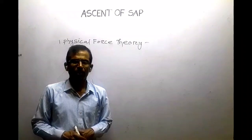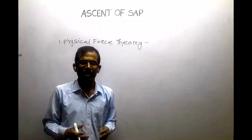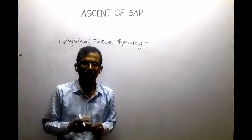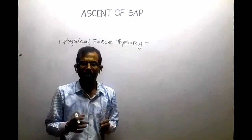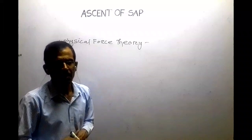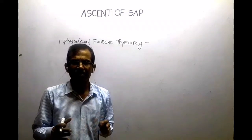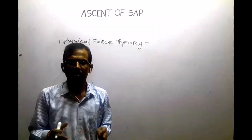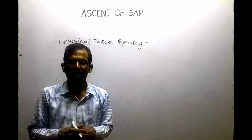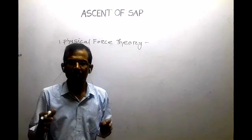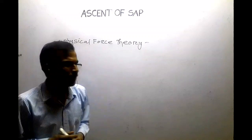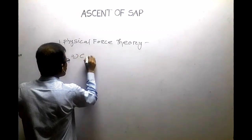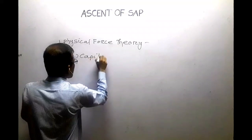Another theory of ascent of sap is the physical force theory, according to which the upward movement of water takes place through the xylem vessels, which are dead cells. The process is purely physical and there is no involvement of living cells in it. Various physical force theories have been proposed from time to time.